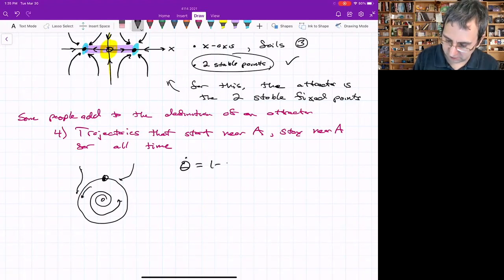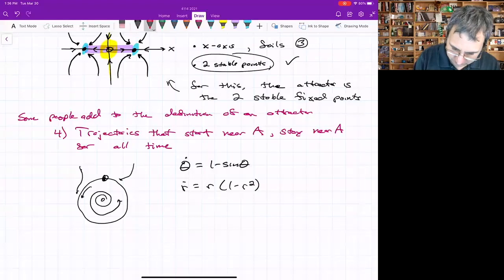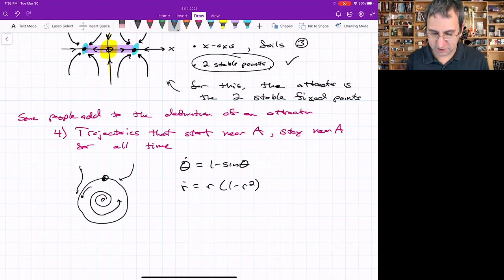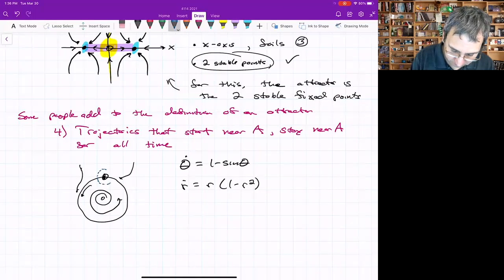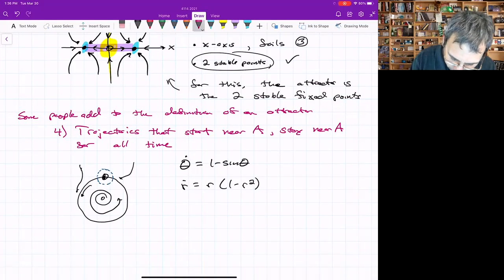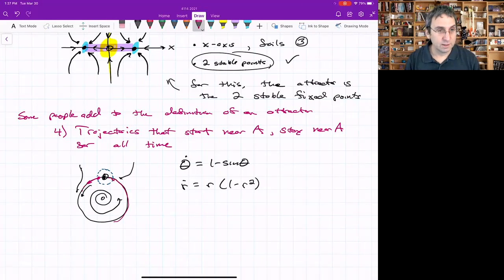This would be theta dot equals 1 minus sine theta. I think r dot was like r times 1 minus r squared. This point seems to attract. This point would qualify as an attractor for points one, two, and three. It's invariant, it attracts an open set. Because it's a point, there's no subset. But there are trajectories that start near that point and yet leave. They leave some neighborhood. What's happening to people in this neighborhood? This point is in the neighborhood, but it leaves, goes outside. It does come back, but it does leave the neighborhood.